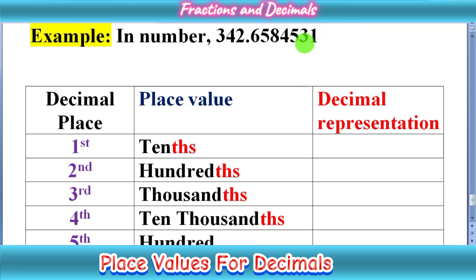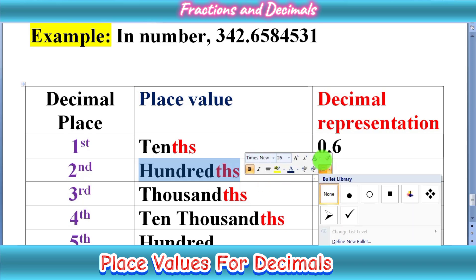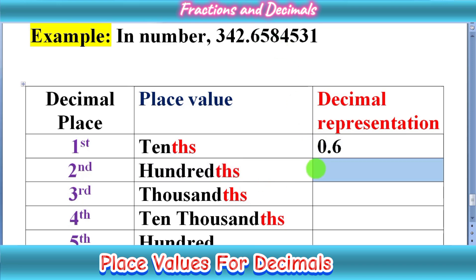So the first place after the decimal point has a place value of tenths — notice it ends with the three letters T-H-S, meaning this is a part. Tenths means we have a part out of ten. You can write six upon ten, or simply 0.6. In the next place we have 5. That second place is hundredths and we can divide this number by hundred — five upon hundred — so we write it as 0.05.